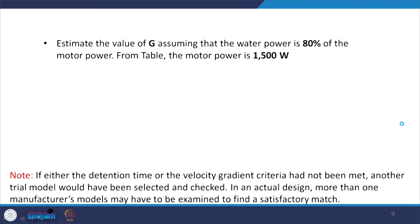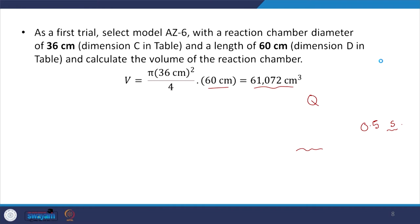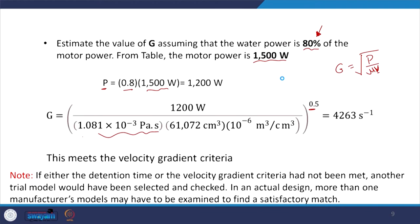Next we need to look at G. We are assuming that not all the energy from the 1500-watt rated motor power is transferred to the water — we assume efficiency is around 80%, so effective P is 0.8 × 1500 watts. G equals the square root of power divided by mu times V. From that we get the G value, which gives us an idea about the mixing. This is acceptable since we were looking at 3000 to 5000 for adsorption coagulation.